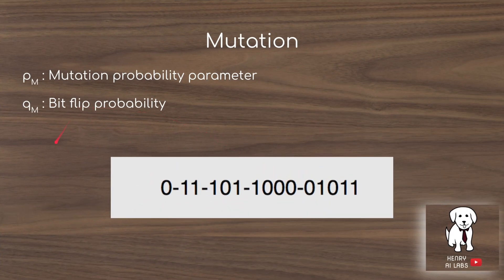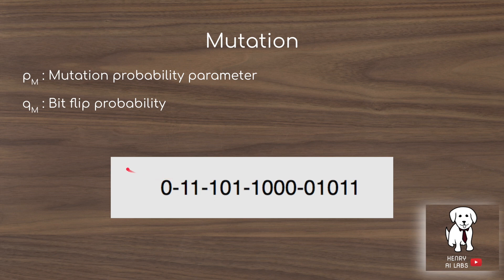Mutation in the Genetic CNN is defined by two parameters. P_M is the probability that a mutation occurs at all — the architecture might not be mutated. If mutation is sampled, Q_M is the bit-flip probability as the algorithm traverses the bit string. For example, if Q_M is 50%, traversing the string might flip 0 to 1, 1 to 0, or leave bits unchanged as it moves through the architecture bit string.